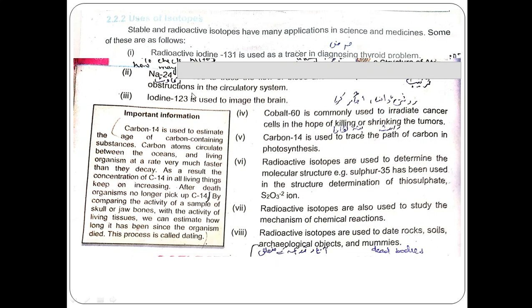Sodium-24 is used to trace the flow of blood and to detect possible constriction and obstruction in the circulatory system. We normally talk about sodium-23, but sodium-24 is the isotope used to monitor blood flow.